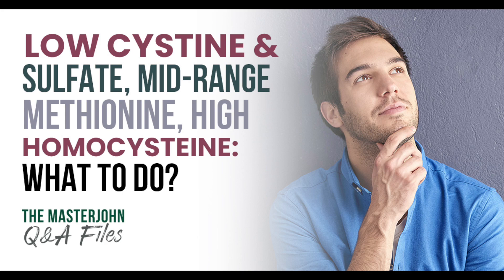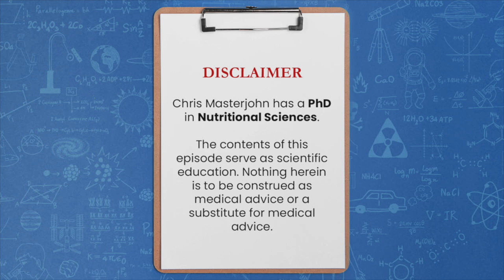Low cysteine and sulfate, mid-range methionine, and high homocysteine — what to do about it? James asks: what are some causes and what should one do about low cysteine and sulfate levels, in particular given slightly elevated homocysteine and mid-range methionine?